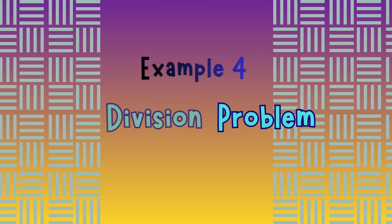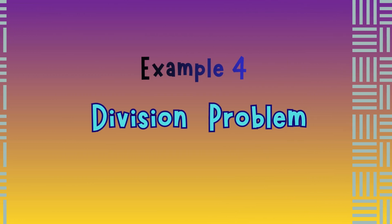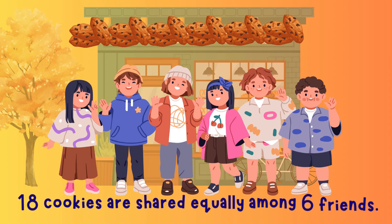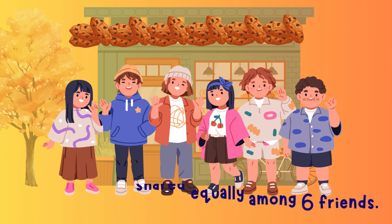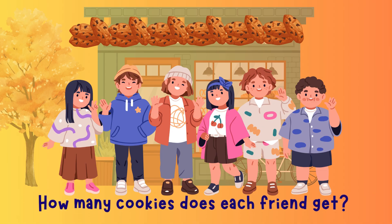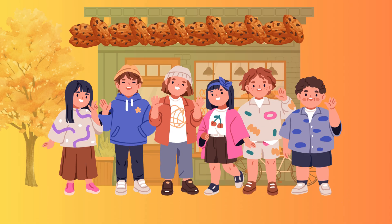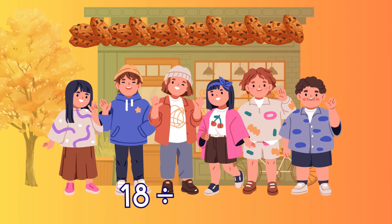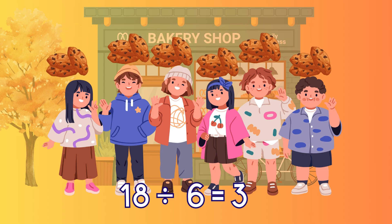Example 4, Division Problem. Eighteen cookies are shared equally amongst six friends. How many cookies does each friend get? Clue words: "shared equally" — that's division. Eighteen divided by six equals three. Each friend gets three cookies.